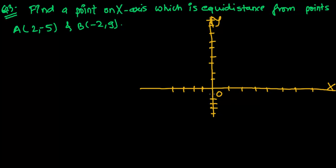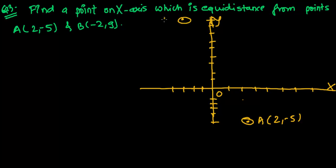So here, it's A(2, -5). Let me go to x = 2 and y = -5 to plot point A. And another point is B(-2, 9). So B is at x = -2, and 9 is the topmost point. So this is point B.